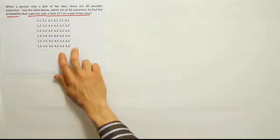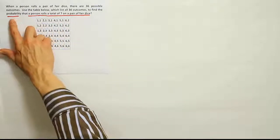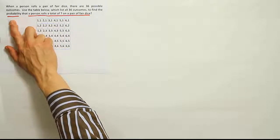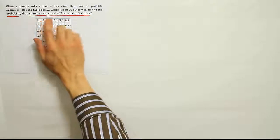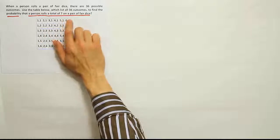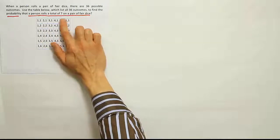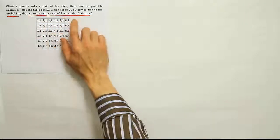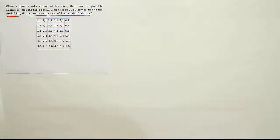Okay, so we have the outcomes listed here. It says find the probability, so I've underlined that key phrase. Obviously we have to do a probability problem here - that a person rolls a total of 7 on a pair of fair dice. So it looks like it's just one roll, and we're looking for the probability that when he rolls those two dice, he gets a total of 7.